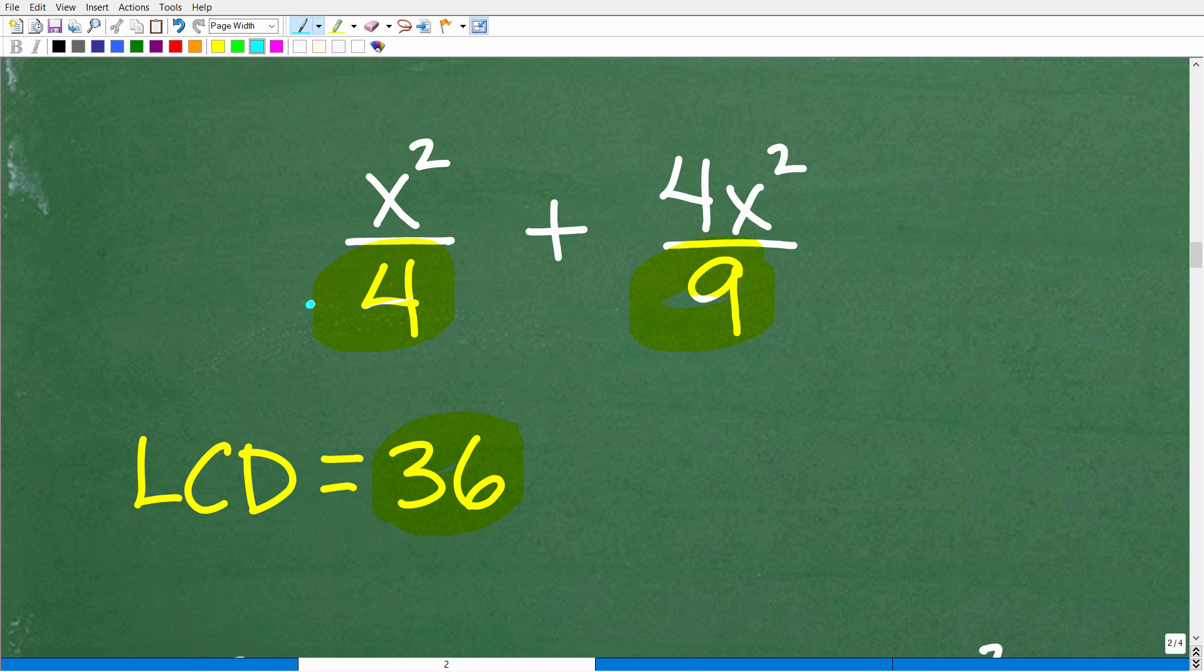We're going to have to change both of these fractions or rational expressions such that the denominator is 36. To change a 4 into a 36, I multiply by 9. I have to multiply the numerator by 9 as well. To change a 9 into a 36, we multiply by 4, which means I multiply the numerator by 4 as well.